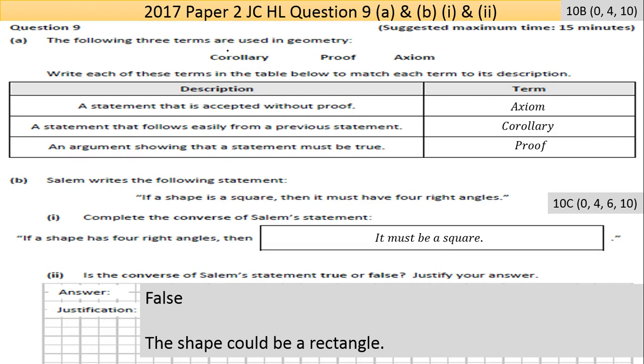So Part B here says Salem writes the following statement: 'if a shape is a square then it must have four right angles.' Part (i) says complete the converse of Salem's statement. What's the opposite of that? So they have half the statement: 'If a shape has four right angles then it must be a square.' Pretty handy - part (i) gives you a mark together, so that's probably a high six there for that. Part (ii) says 'Is the converse of Salem's statement true or false?'